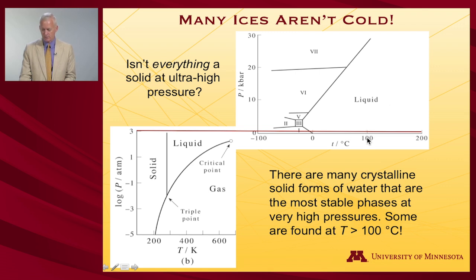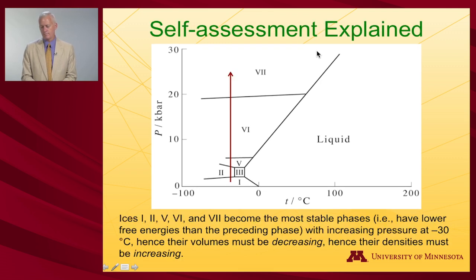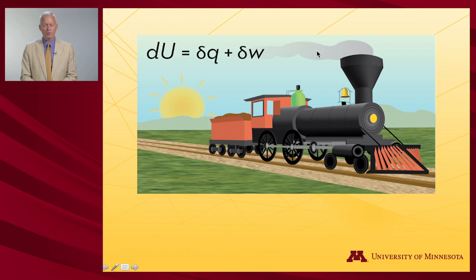There's the interesting phenomenon that at a temperature of 100 degrees Celsius — which normally means boiling water — under sufficient pressure, you can have ice seven at the temperature at which water boils at atmospheric pressure. Again, there's an opportunity to do a quick self-assessment to order the densities of some ices at a particular temperature. And that's it for water — a terrifically important substance, and it was fun to get to know it a little bit better. In the next video, we're going to look at supercritical behavior.